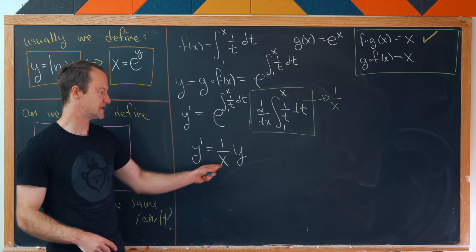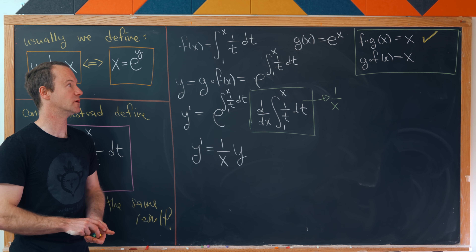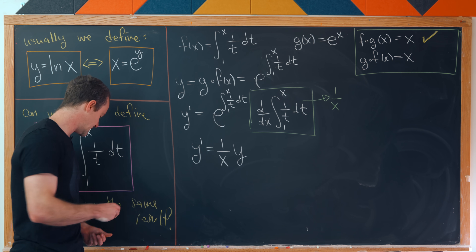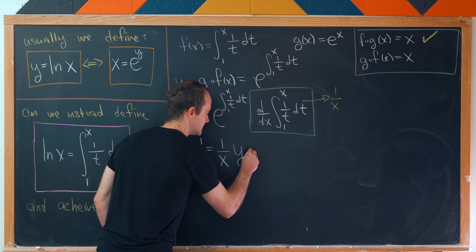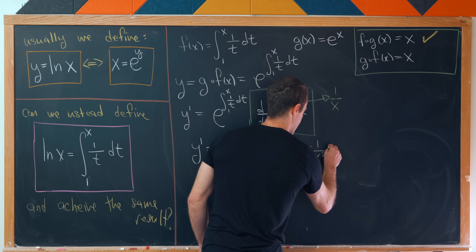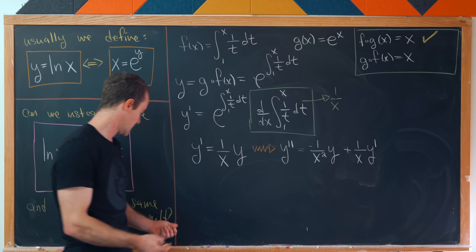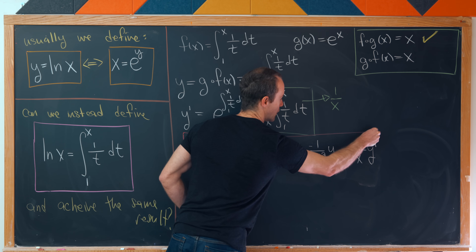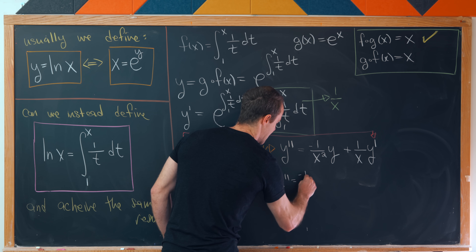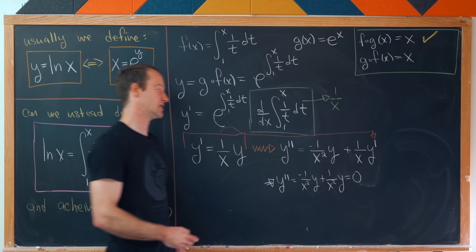You might think to divide by y and use separation of variables, but doing so would require using the fact that the exponential and logarithmic functions are inverses — which is exactly what we're trying to prove. So we need another approach. Instead, let's differentiate y' = (1/x)·y one more time. We get y'' = −(1/x²)·y + (1/x)·y'. But since y' = (1/x)·y, substituting gives y'' = −(1/x²)·y + (1/x²)·y = 0.